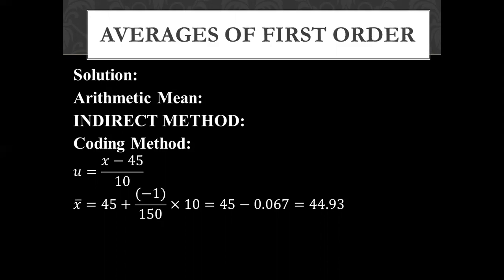So we have here A is 45, h is 10. So at all places we write their values. x bar is equal to 45 plus minus 1 over 150 into 10. If we solve it, then 45 minus 0.067 and this is equal to 44.93. If you can see, we have arithmetic mean in any way, whether shortcut, coding, or direct method, the answer will always come the same from the same data.